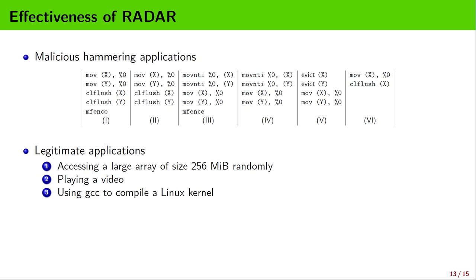The effectiveness of our RADAR system is evaluated against various hammering methods. For example, using CLFlush, moving NT, or eviction to perform either single-sided or double-sided hammering. We include one-location hammering as well. To compare, we also run three legitimate applications. In the first scenario, a large array of size 256 megabytes is randomly accessed. So there will be a large number of cache misses, and the DRAM will be accessed very often. In the second video playing scenario, the video player will continuously use non-temporal instructions to load the video frames for decoding, so the memory is accessed very often as well. In the third scenario, GCC is used to compile a Linux kernel, which will generate a large number of CPU memory I/O traffic.